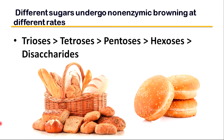Different sugars undergo non-enzymatic browning at different rates. The reactivity of the carbonyl group differs according to the following rules: aldoses are generally more reactive with amino acids than ketoses, while alpha-dicarbonyl compounds are even more reactive than aldoses. However, some studies have shown that D-fructose undergoes Maillard browning reaction faster than D-glucose.